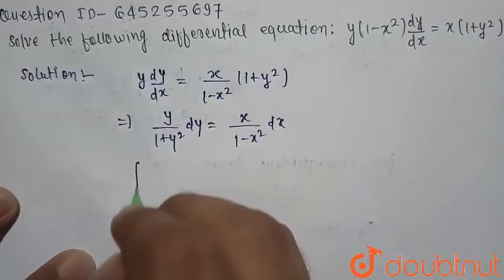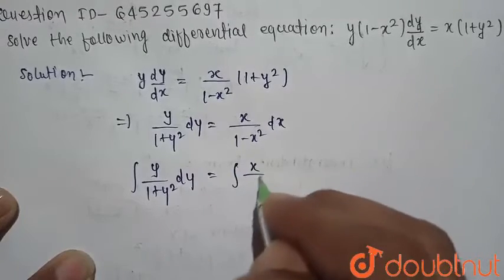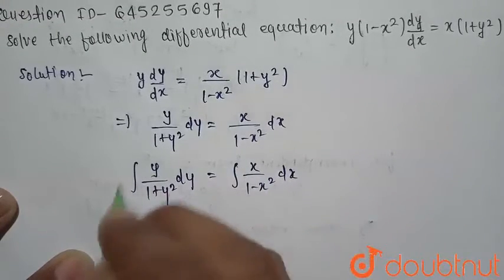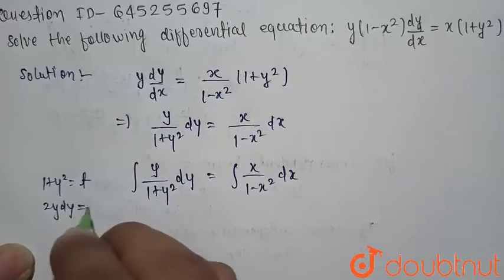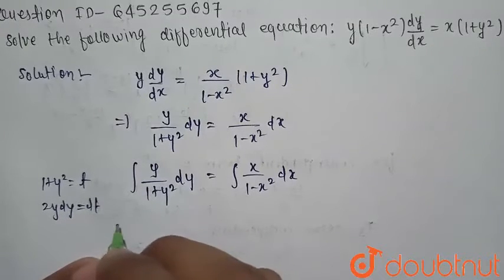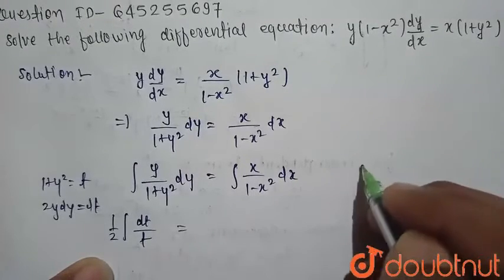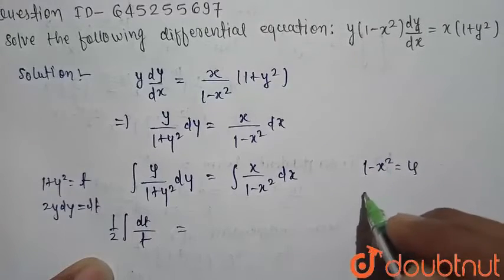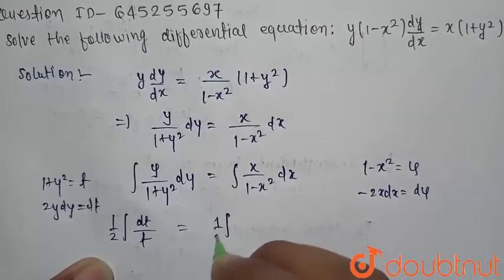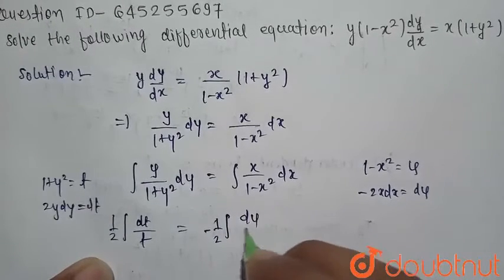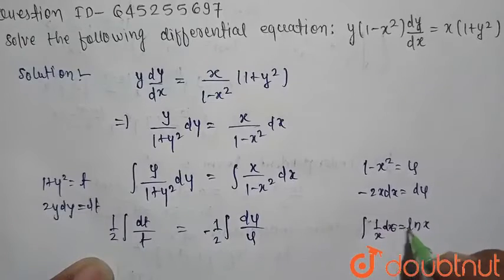Now we integrate both sides. For the left side, let 1 plus y squared equal t, so 2y dy equals dt. For the right side, let 1 minus x squared equal u, so minus 2x dx equals du. This gives us the integral of (1/2) dt over t on the left, and the integral of minus (1/2) du over u on the right.